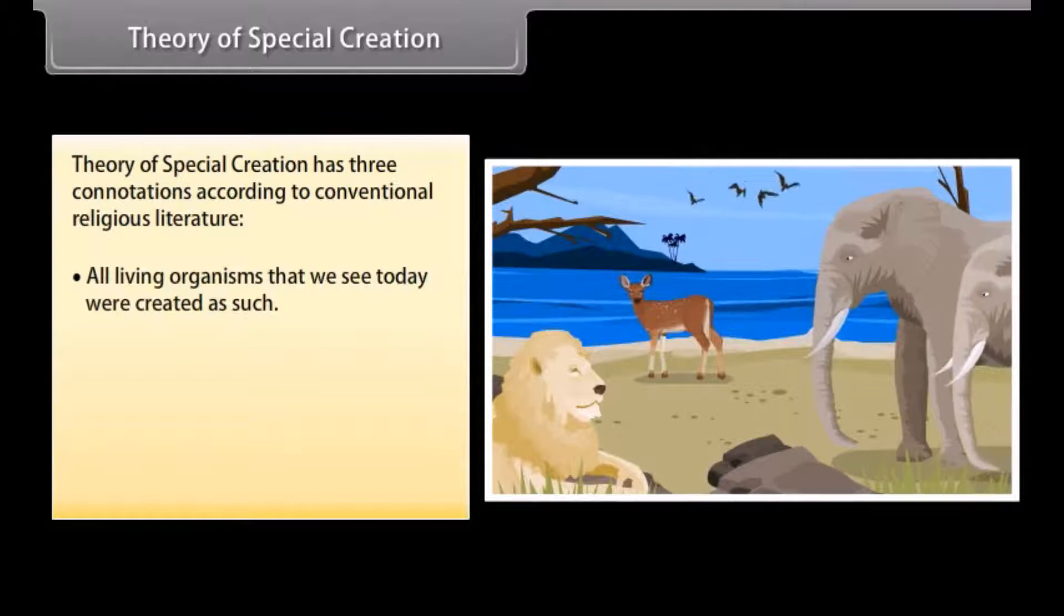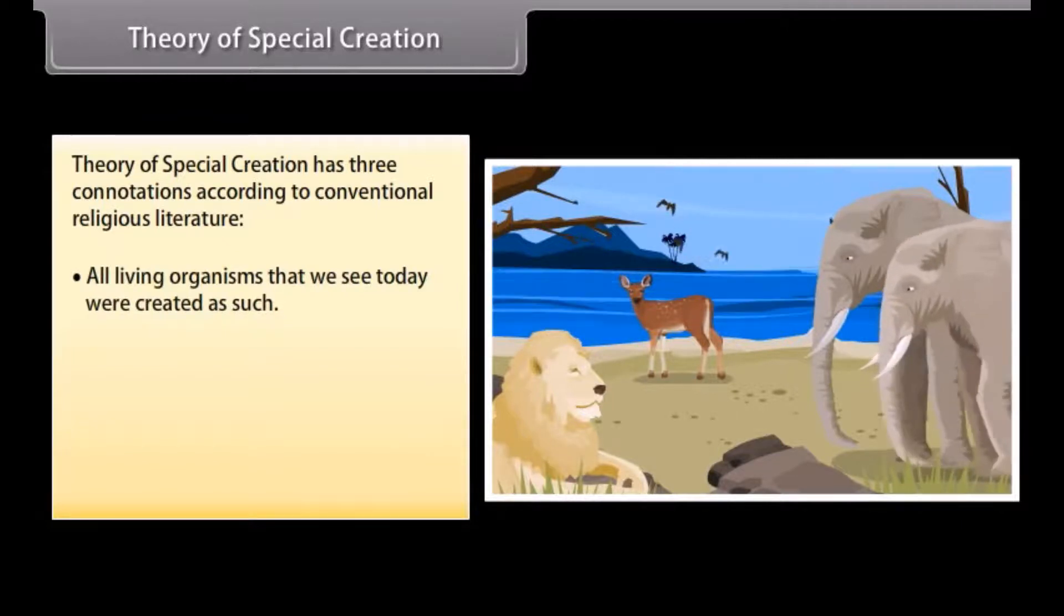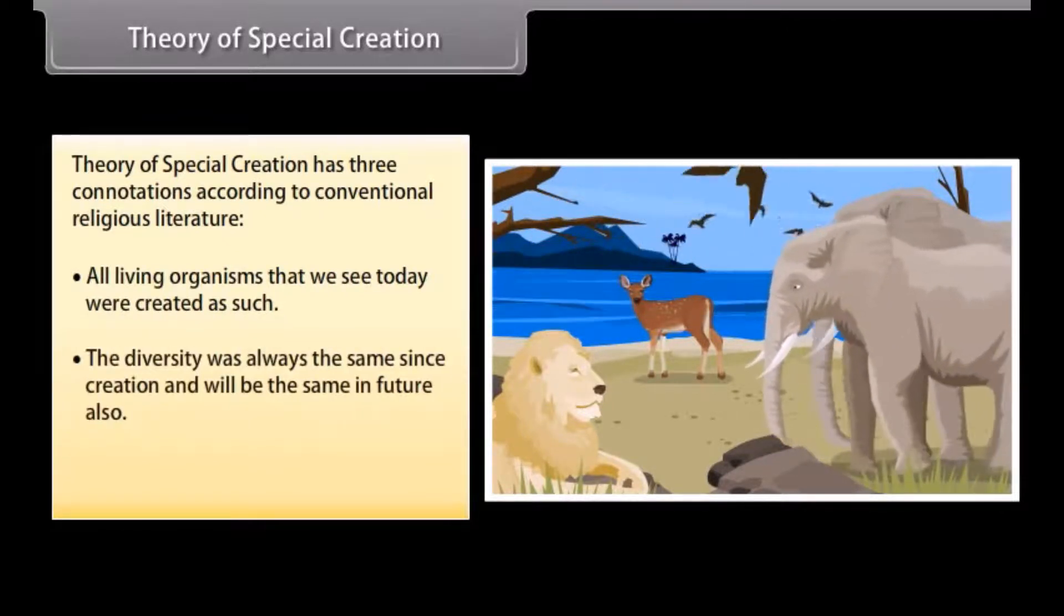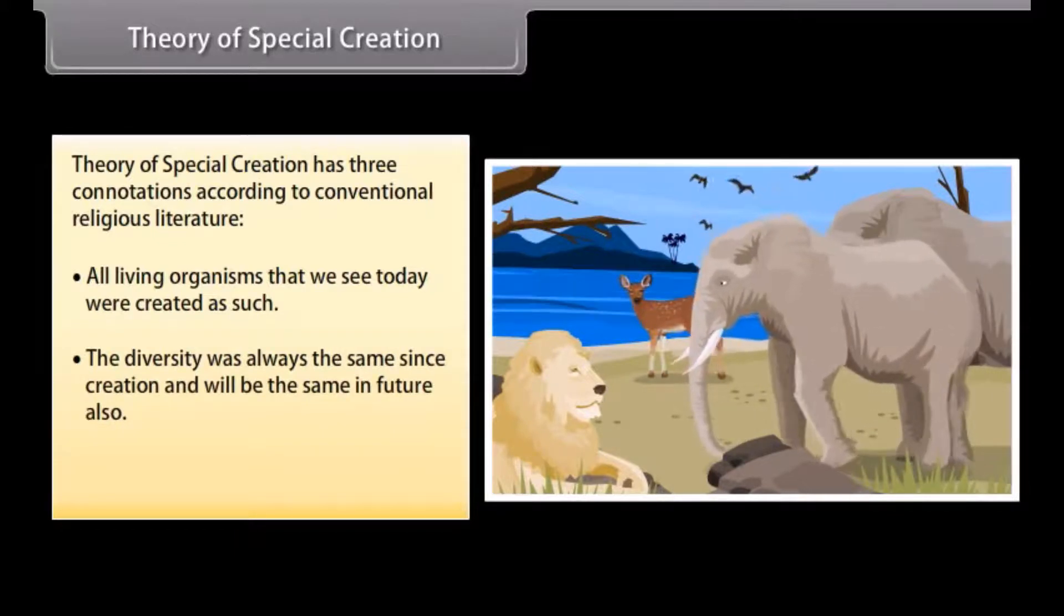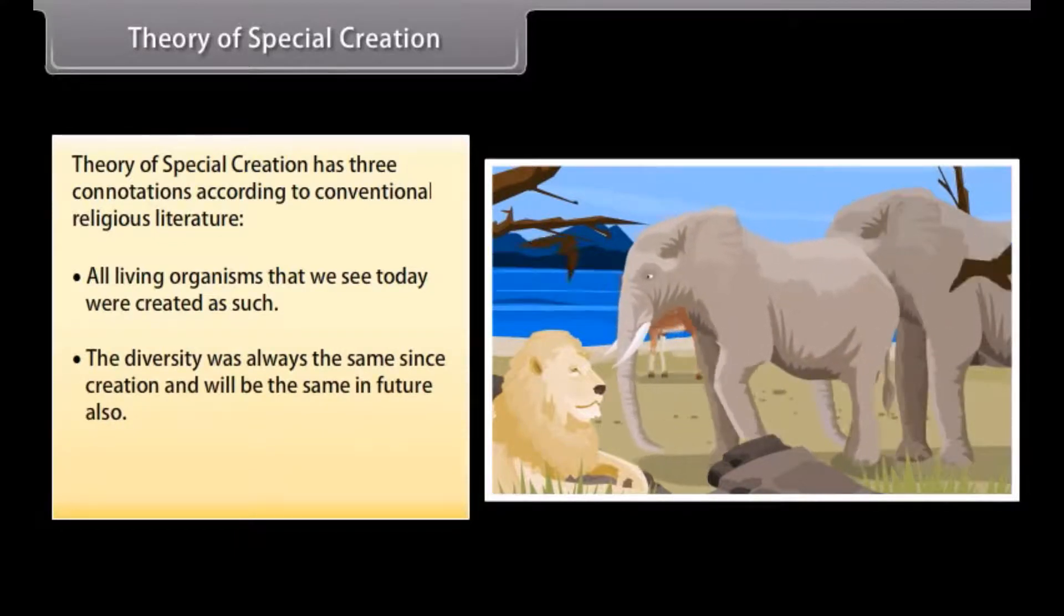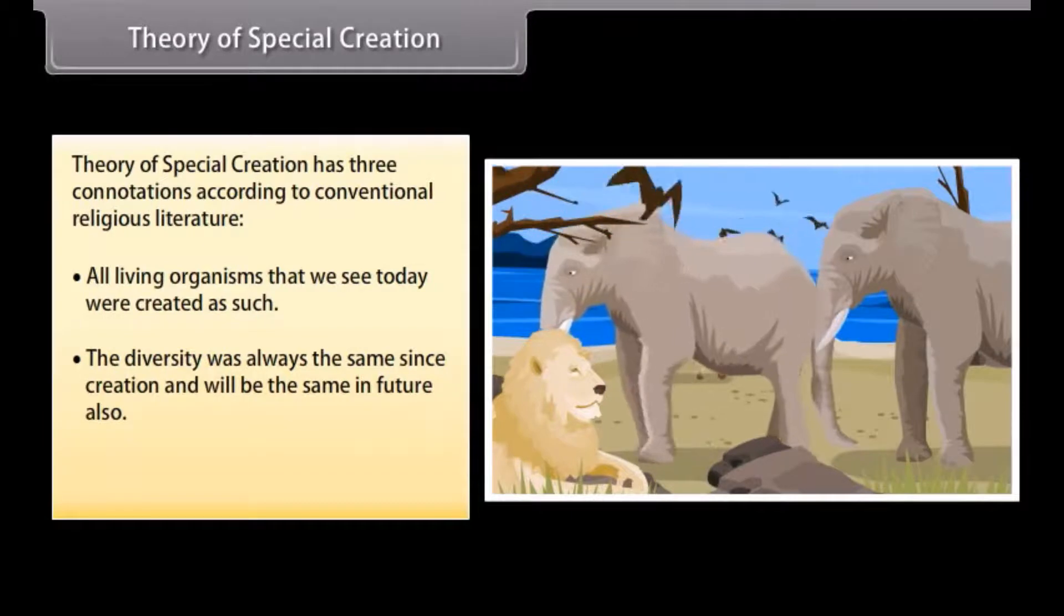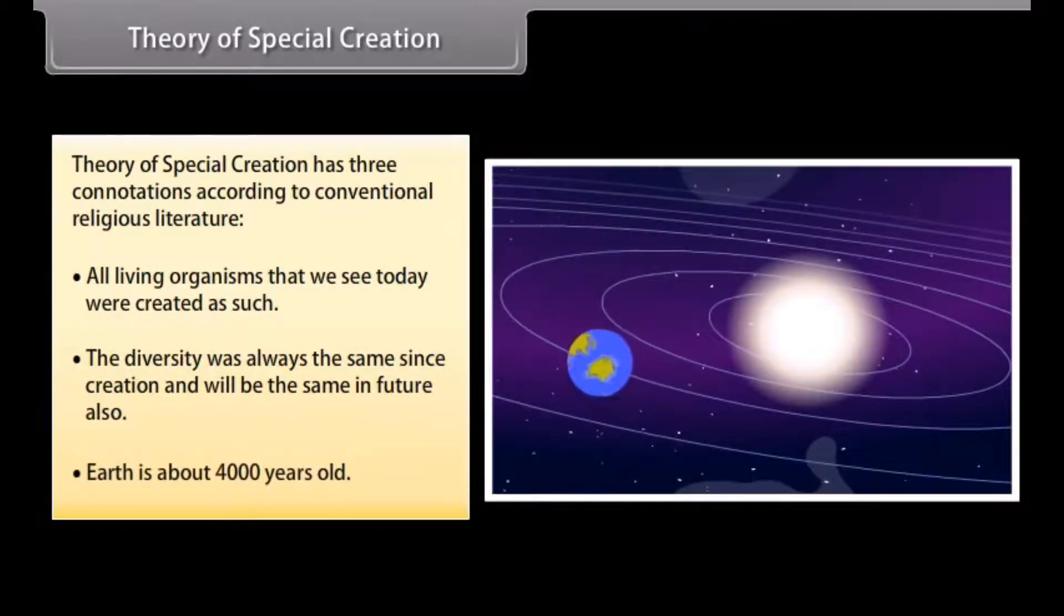Theory of special creation. Theory of special creation has three connotations according to conventional religious literature. All living organisms that we see today were created as such. The diversity was always the same since creation and will be the same in future also. Earth is about 4000 years old.